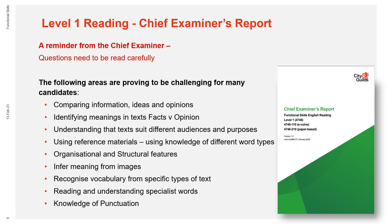In the latest Chief Examiner's report for reading at level one, there's an outline of the areas where candidates have performed well, in addition to those that they find more challenging. The Chief Examiner discovered that the following areas showed weakness and need more development in many candidates: comparing information, ideas and opinions, and identifying meanings in texts and understanding facts versus opinion.